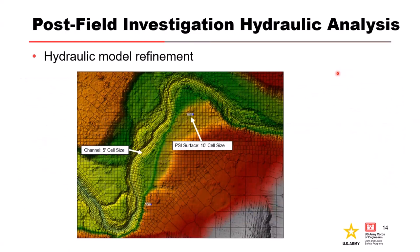Now we're talking about the post-field investigation process. Once the field team identified terraces and other geologic and geomorphic locations that may provide evidence of paleofloods, this information can be used to refine our hydraulic model. Examples of refinement may include recalibrating the model based on geologic evidence of the flood of record — so maybe we calibrated to an upstream or downstream gauge, but now we've found geologic evidence within our reach, giving us a new, high-quality calibration point. We might also refine the model by making our cell size smaller at the terraces we're looking at, so we can better understand inundation velocities and shear stresses at the locations most interesting to our paleoflood analysis.